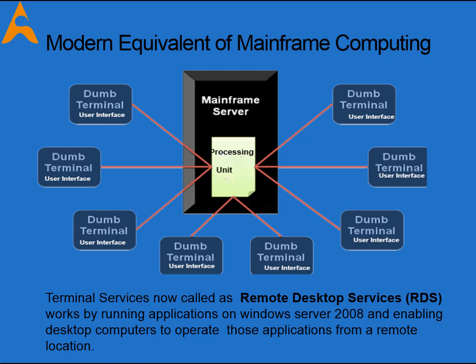Earlier, mainframes had dumb terminals and all the processing happened at the mainframe. The mainframe gave time-sharing access to all dumb terminals, meaning every dumb terminal connected to the mainframe got a little processing power. Now, instead of mainframe terminology, a terminal services server is installed on Windows Server 2008, and Remote Desktop Services (RDS) works by running applications on Windows Server and enabling desktop computers to operate those applications from a remote location.